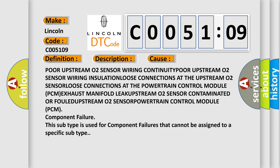Poor upstream O2 sensor wiring continuity, poor upstream O2 sensor wiring insulation, loose connections at the powertrain control module PCM, exhaust manifold leak upstream O2 sensor, contaminated O2 sensor, or powertrain control module PCM component failure. This subtype is used for component failures that cannot be assigned to a specific subtype.